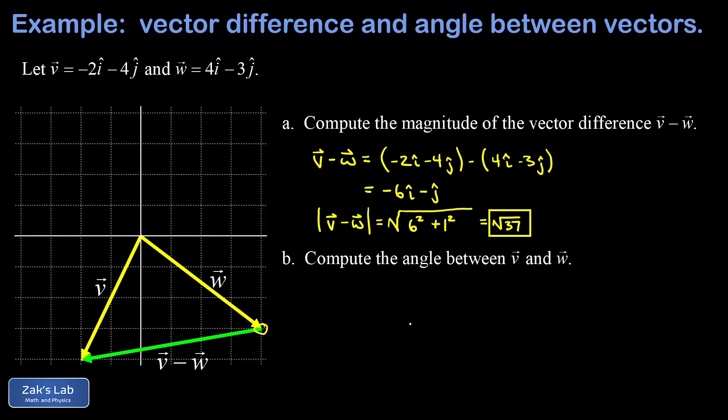In part b, we want the angle between these two vectors. The plan is to get this from the dot product. As a quick reminder, the geometric interpretation of dot product v·w is the product of the magnitudes of those two vectors: |v| × |w| × cos(θ), where θ is the angle between them.